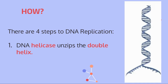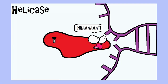Now that we have a refresher on why cells undergo DNA replication, let's talk about how. There are four different stages you need to know, including everything involved in each step. The first step is that DNA has to unwind itself. Helicase, which is an enzyme or protein, unzips and unwinds the entire DNA molecule.